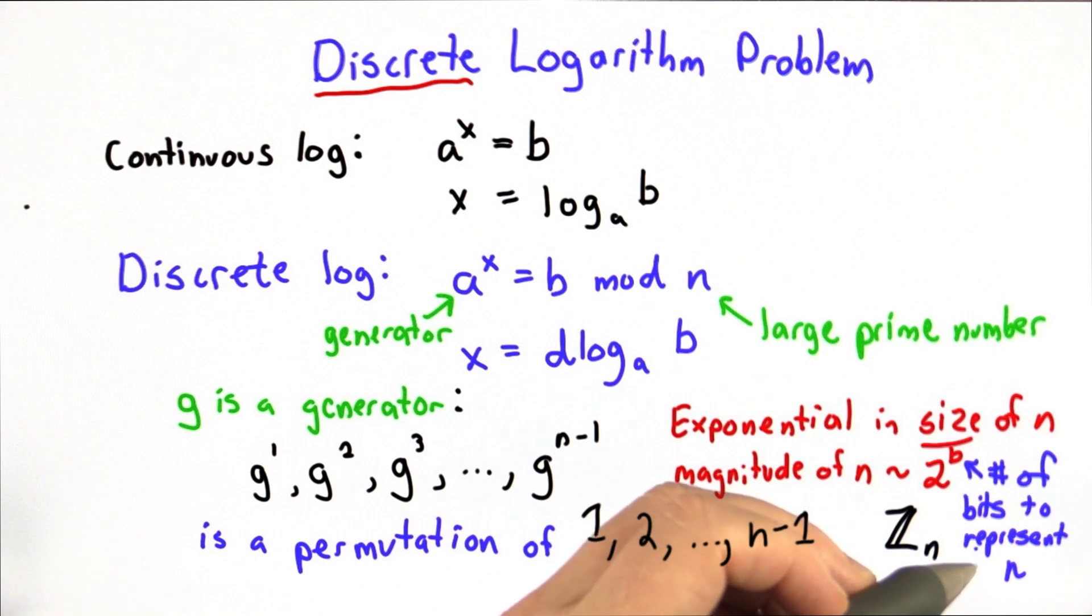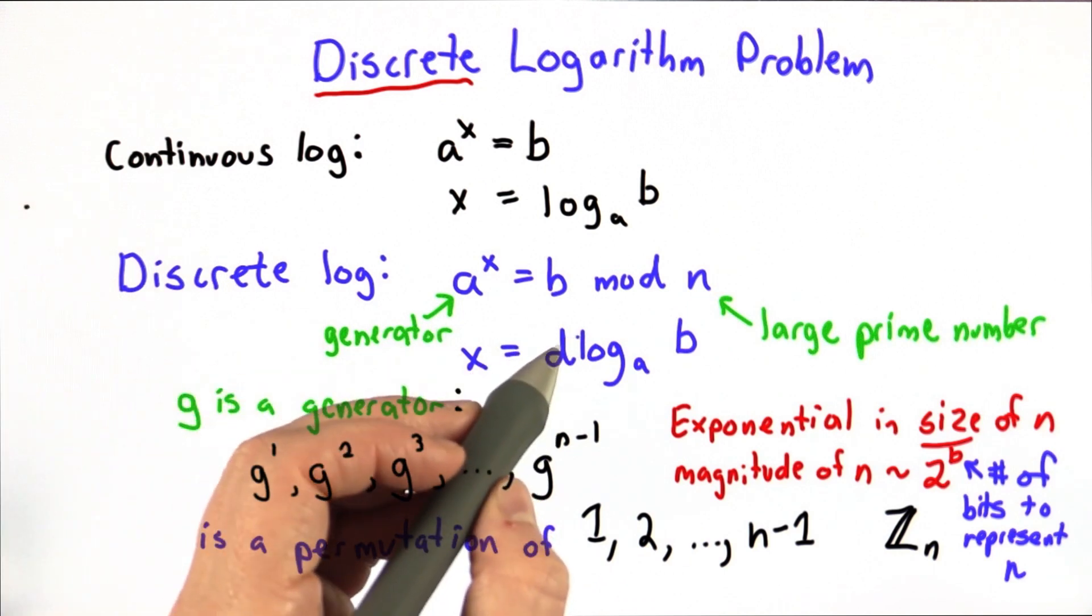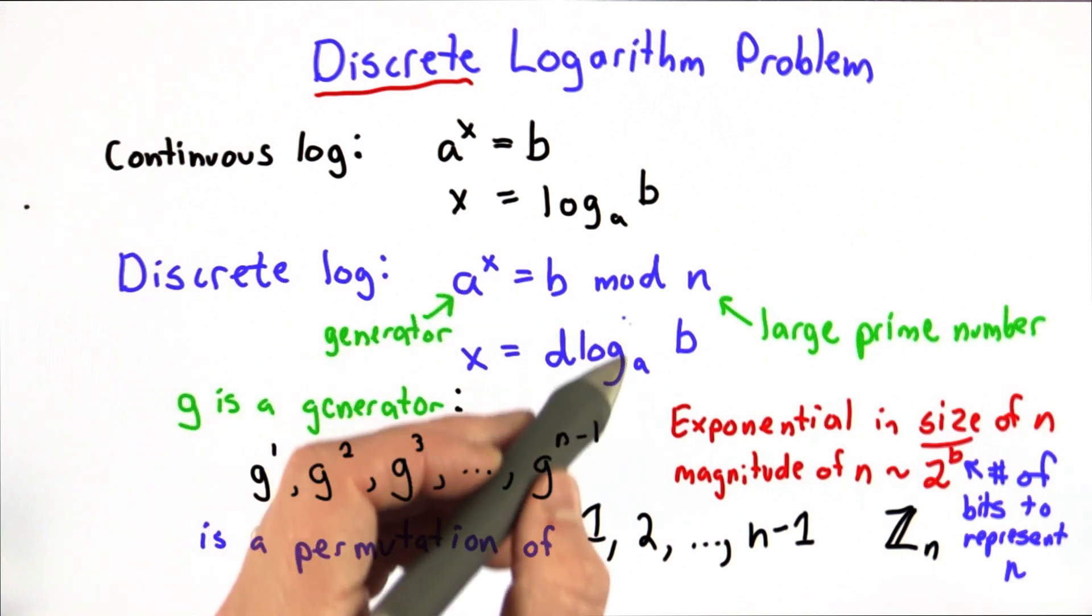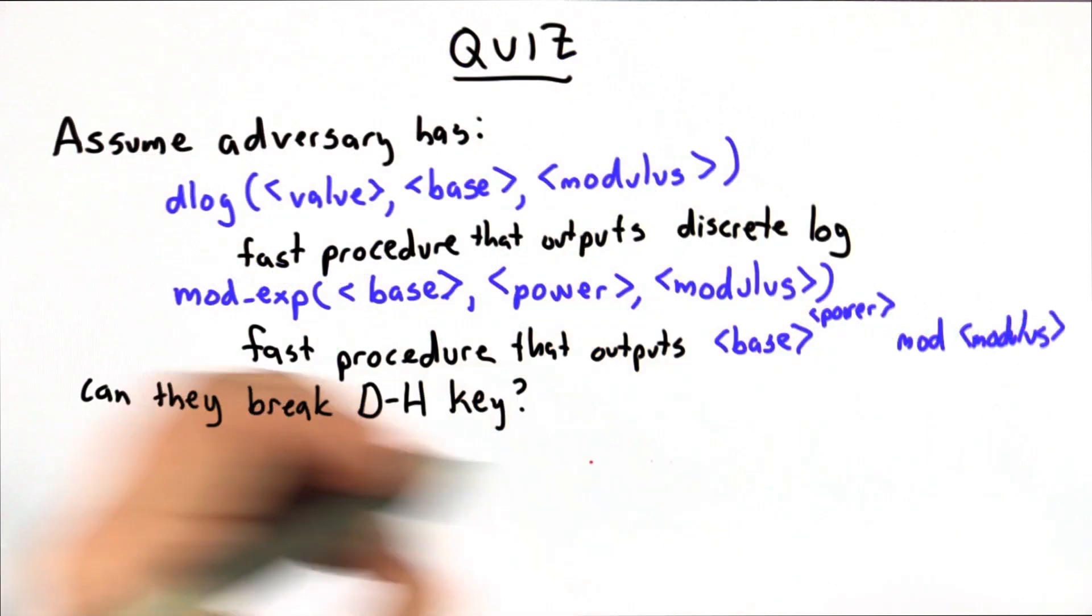So as long as no one can find a fast way to solve the discrete log problem, as long as n is large and is an arbitrary instance of this problem, we think that it should be hard to compute x given a and b and the modulus. So for this quiz,